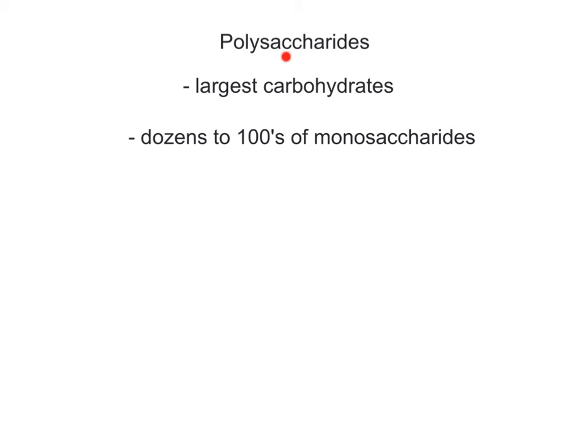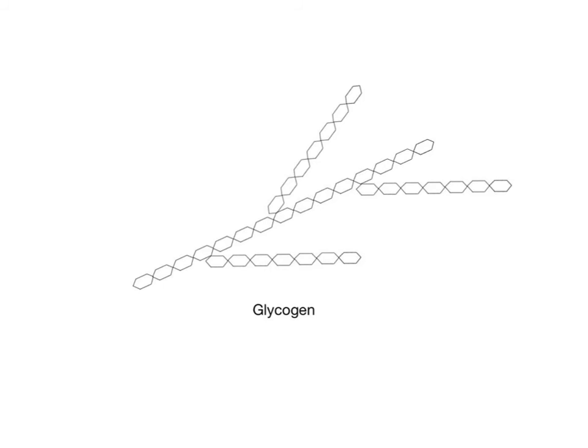Polysaccharides, meaning many sugars, are the largest carbohydrates. They are made out of dozens to hundreds of monosaccharides joined together through many dehydration synthesis reactions. The most important polysaccharide in the human body is glycogen, which consists of branching chains of glucose monomers and is stored in liver cells and skeletal muscle fibers. One molecule of glycogen can contain as many as one million glucose monomers. Glycogen can be broken down into its individual glucose monomers through hydrolysis reactions, which is one way the body maintains blood glucose homeostasis. When blood glucose levels are low, glycogen molecules stored in the liver are broken down into glucose and released into the blood.